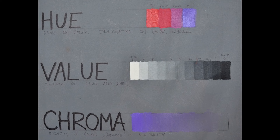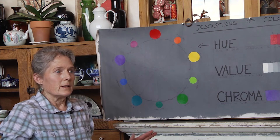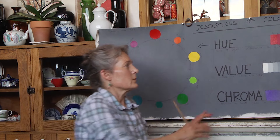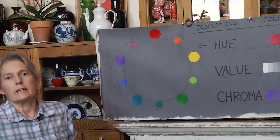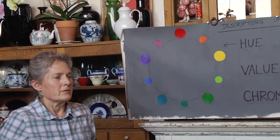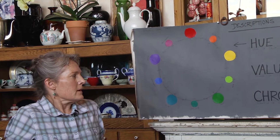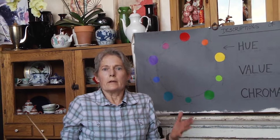There's nothing that's going to improve your work more than getting this part down. It's something you can always improve on, and it doesn't just apply to still life — the lessons in this class will help your trees look more realistic, portraits, whatever you're working on. It'll improve any subject matter because we're working with the exact same problem in any genre: the simplifying of values.